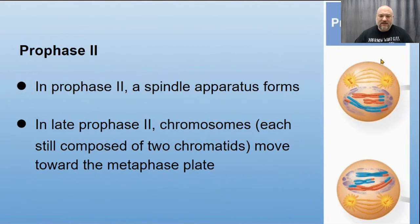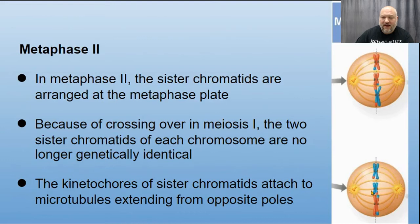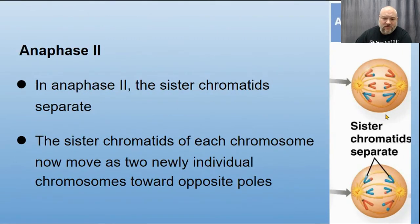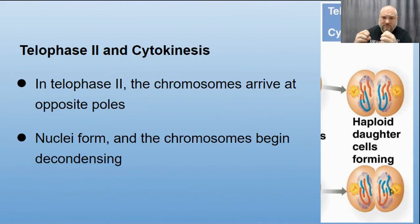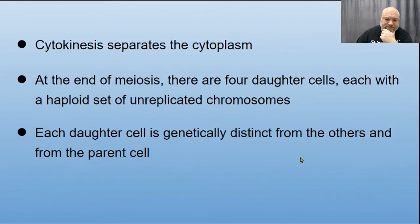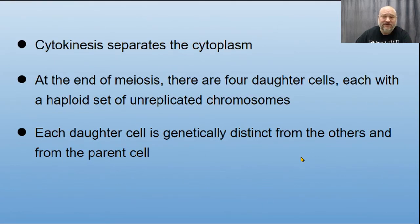In prophase II, the spindle apparatus forms. In metaphase II, the chromosomes — each still composed of two chromatids — move toward the metaphase plate, and spindle fibers attach to each of the two sister chromatids. We're going to split these sister chromatids apart at this point, which is why this looks more like mitosis. In anaphase II, chromatids are split — some with crossing over, producing unique new chromosomes with different gene combinations. In telophase II and cytokinesis, the nuclei and cytoplasm are separated again.